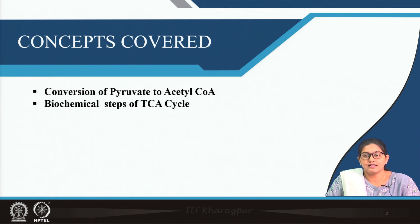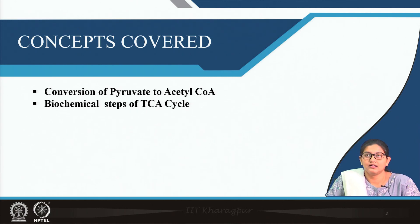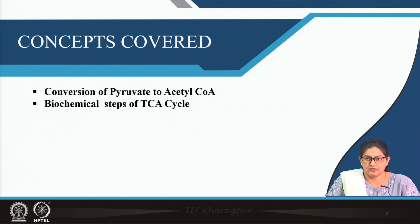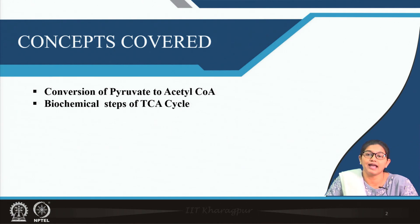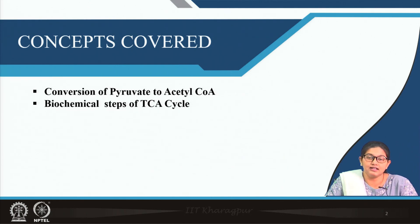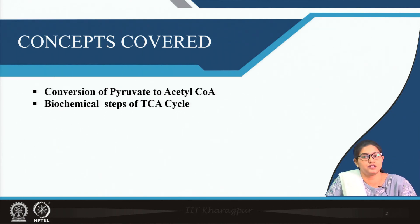Before discussing TCA cycle, I would like to highlight that in the previous session we have seen that glucose is the major source of fuel and can undergo aerobic glycolysis as well as anaerobic glycolysis. In mammalian cells, which are mostly aerobic, pyruvate enters the TCA cycle by forming acetyl coenzyme A. At the end of TCA cycle there is formation of fuel reducing equivalents, which are utilized to form energy in the form of ATP in oxidative phosphorylation.